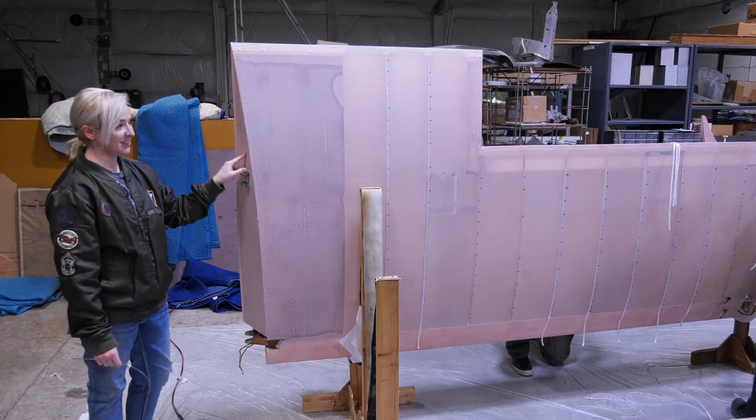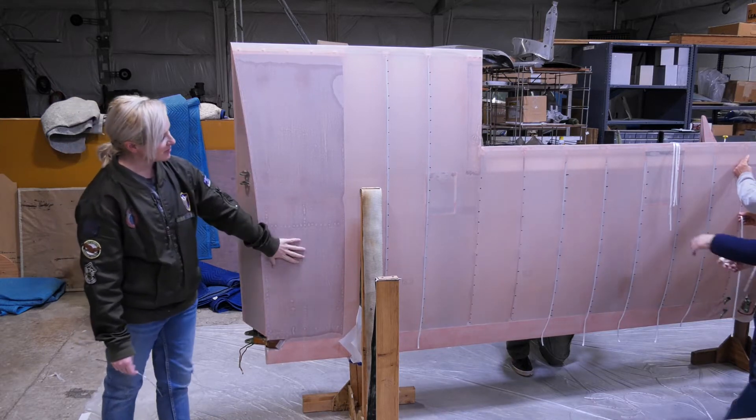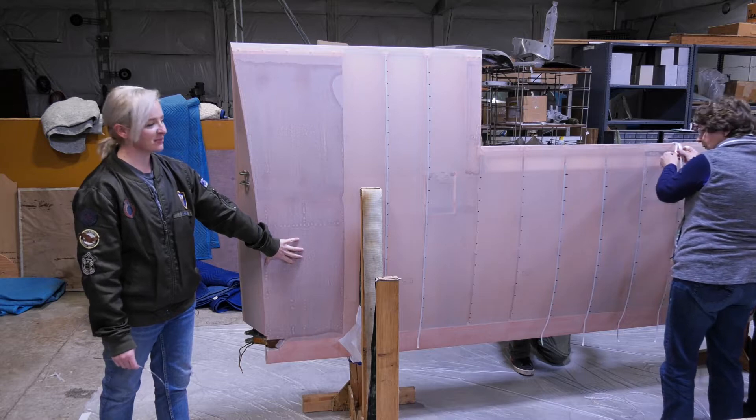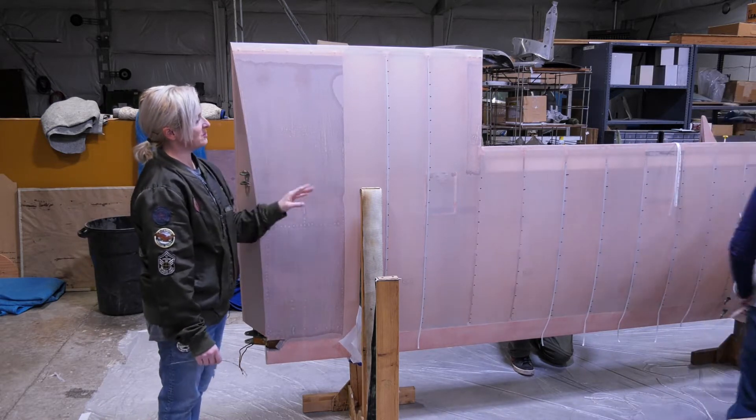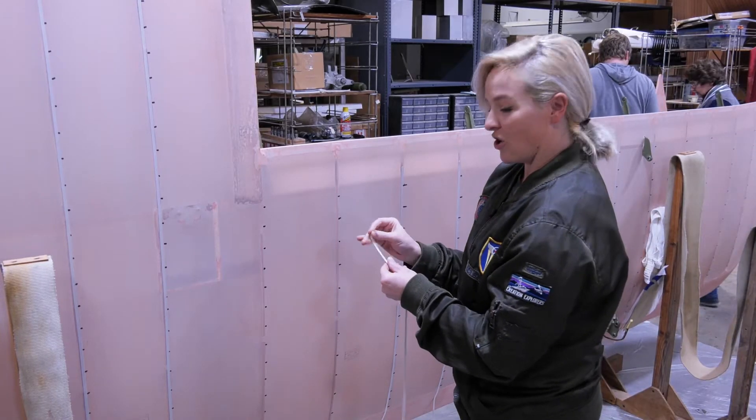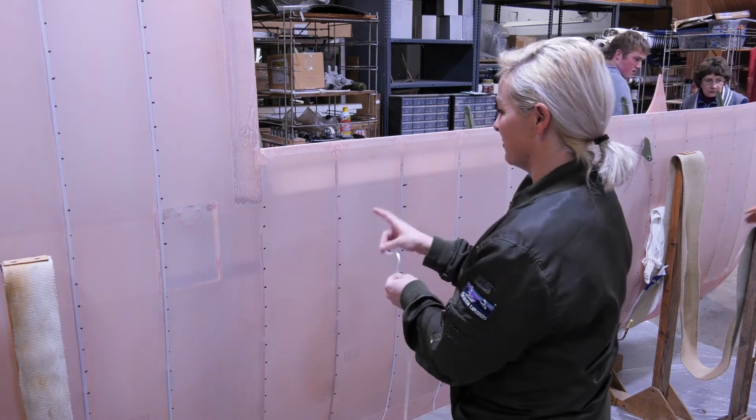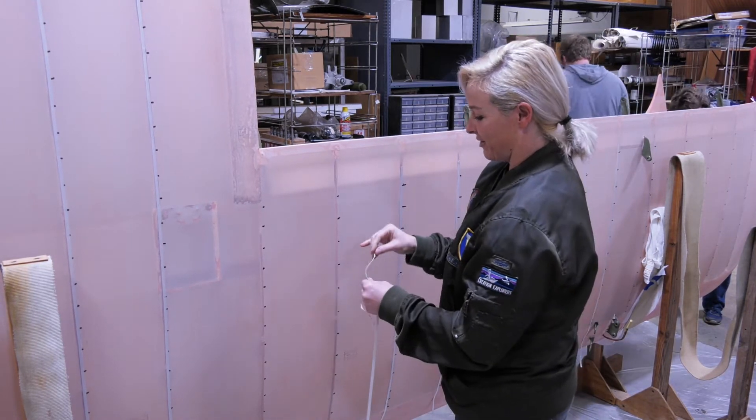This is the Stearman wing and it is ready for rib stitching. We have put on the fabric and it's been pre-shrunk and pre-doped with poly brush. Now what we're doing is putting reinforcing tape on it. This is special strong reinforcing tape to go under the rib stitch so it doesn't break through the fabric if there's any fluttering while flying.